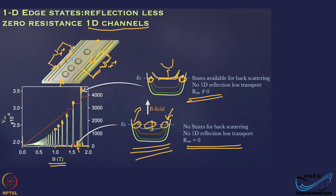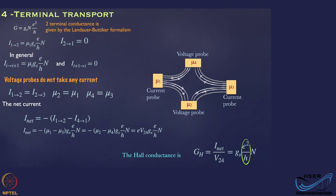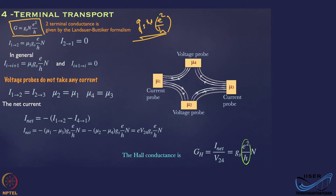Now let us look at what happens when you put multiple probes on the device. We are going to use the Landauer-Büttiker formalism. The two-terminal conductance is given by G = G_s × N × e²/h, where G_s is the degeneracy, N is the number of channels, and e²/h is the conductance per channel. This is the Landauer-Büttiker formalism, applicable only for reflectionless transport. If you have reflection scattering in the system, this formula is not valid — it applies only for perfect reflectionless transport.